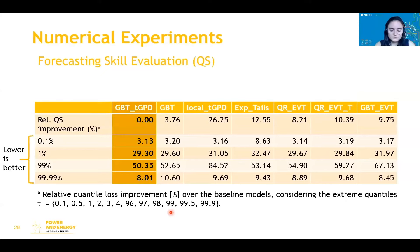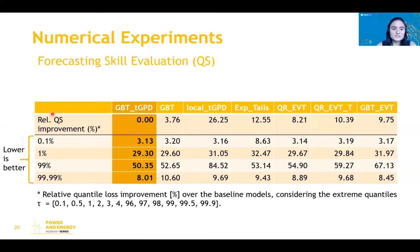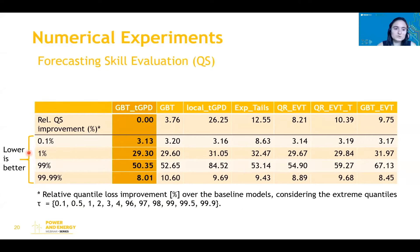Here is a summary of the quantile score — lower is better. The first line in the table shows improvement over baselines for all extreme events; the improvement is at least 3.76%. The quantiles considered are 0.1%, 0.5%, 1%, 2%, 3%, and so on. In a more detailed analysis for each extreme quantile — 0.1%, 1%, 99%, and 99.9% — our model outperforms the benchmarks, and the improvement is more impressive for the superior tail.